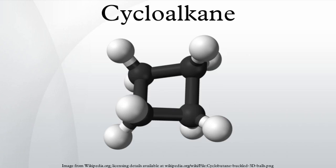Cycloalkanes are types of hydrocarbon compounds that have one or more rings of carbon atoms in the chemical structure of their molecules. Alkanes are types of organic hydrocarbon compounds that have only single chemical bonds in their chemical structure. Cycloalkanes consist of only carbon and hydrogen atoms and are saturated because there are no multiple C-C bonds to hydrogenate. A general chemical formula for cycloalkanes would be CₙH₂ₙ₋₂G, where N equals the number of C atoms and G equals the number of rings in the molecule.